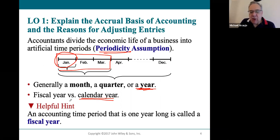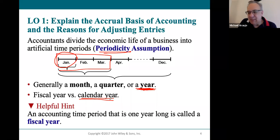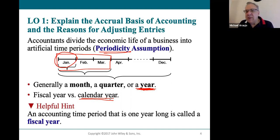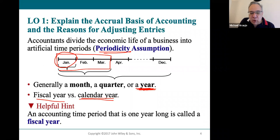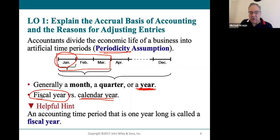For other businesses, closing their books at the end of December doesn't make sense because late December is still very busy — for example, retail is still in the Christmas shopping season. It doesn't make sense to force a retail company to report on December 31st because they're still very busy. So companies like that can choose any 12-month period of time to do their accounting records, and that's called a fiscal year.